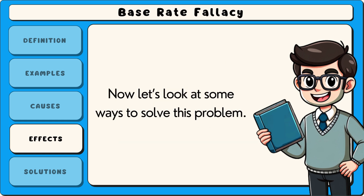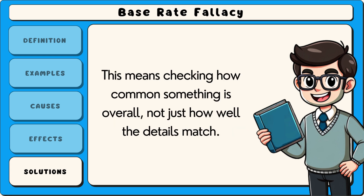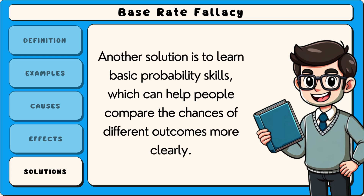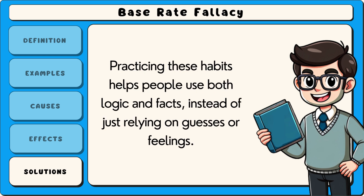Now let's look at some ways to solve this problem. One solution is to always ask about the base rate before making a judgment — checking how common something is overall, not just how well the details match. Another solution is to learn basic probability skills, which can help people compare the chances of different outcomes more clearly. People can also slow down their thinking and ask themselves if they're focusing too much on one story or example. Practicing these habits helps people use both logic and facts instead of just relying on guesses or feelings.